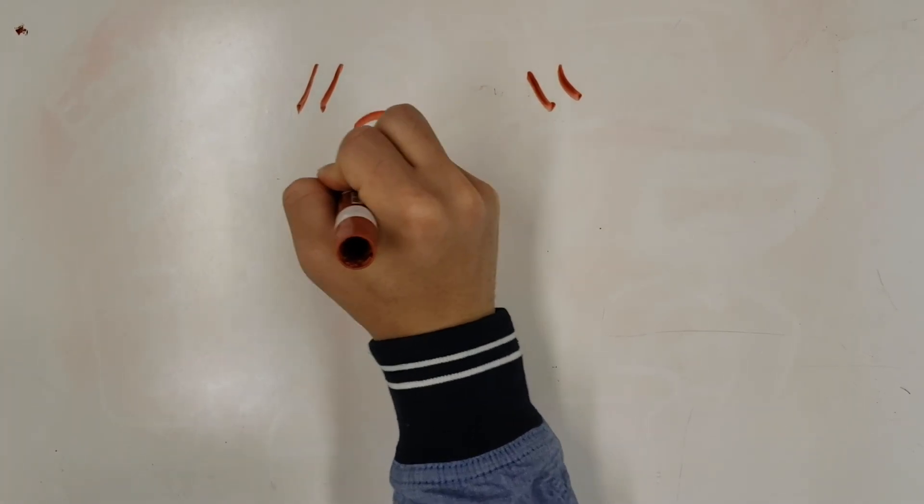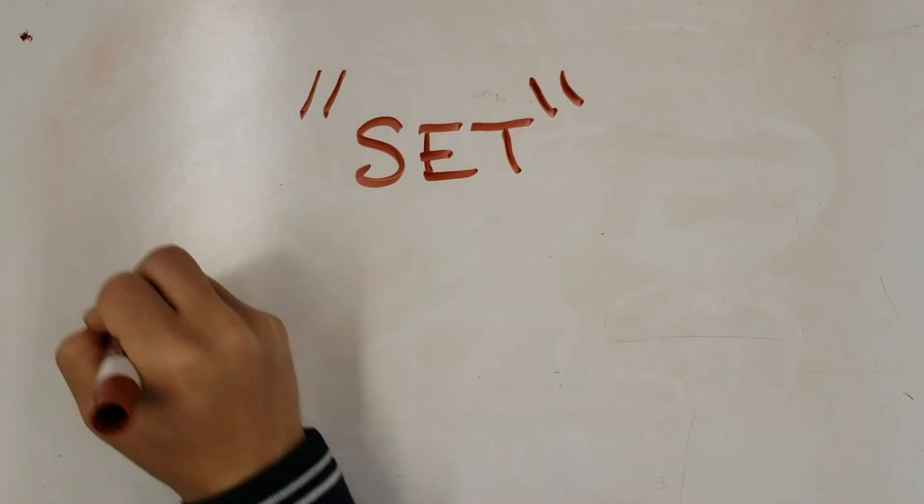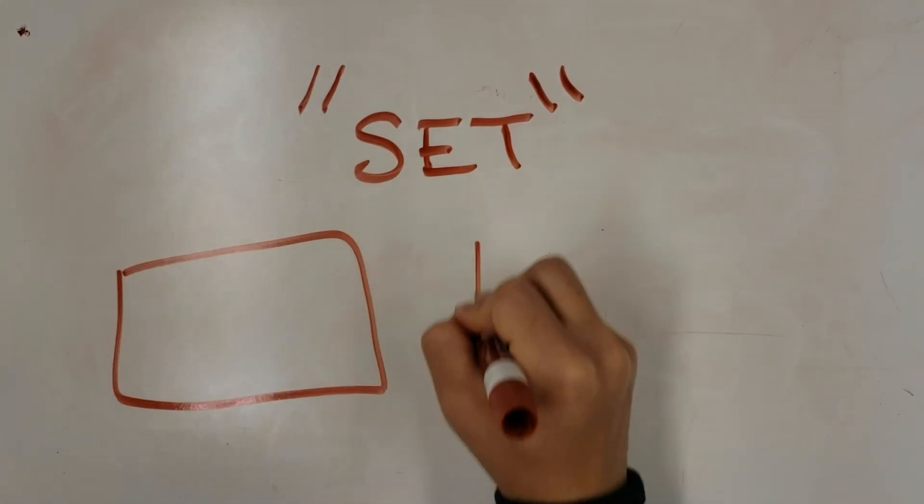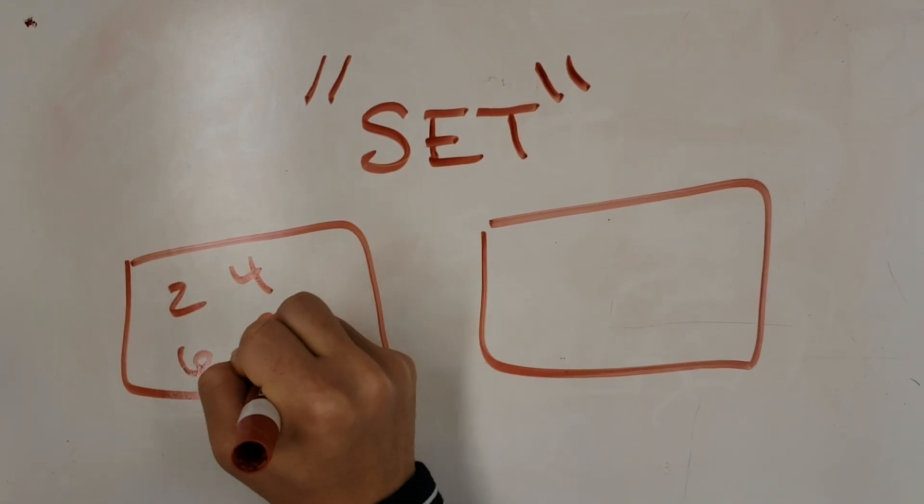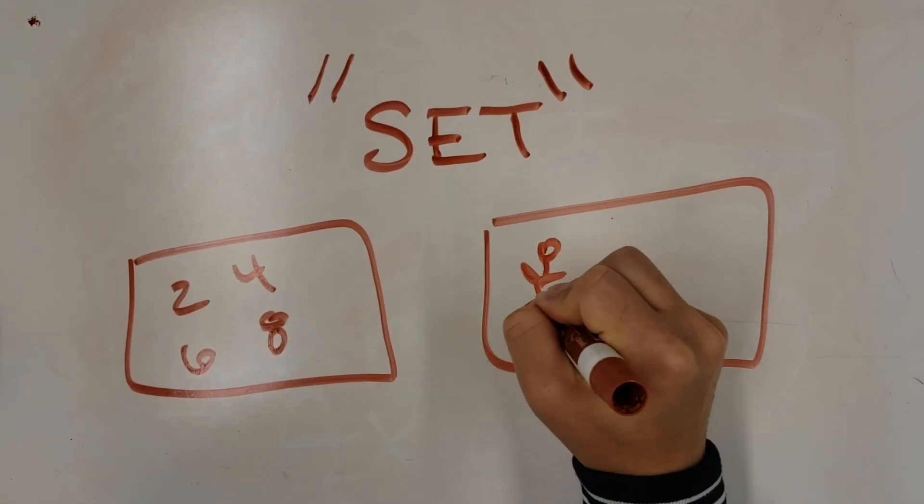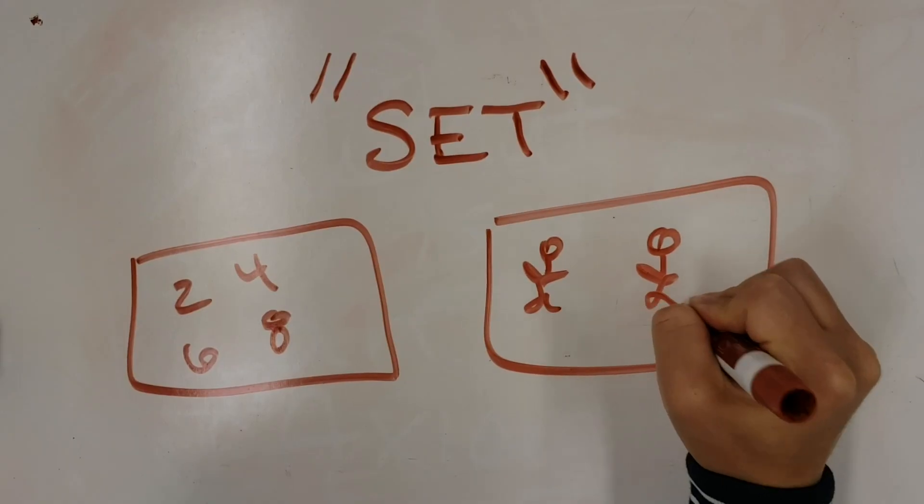An example would be the existence axiom that merely claims there exists a set. All kinds of sets can be imagined: the set of even numbers or even the set of your friends. Hence we have a good reason to accept the existence axiom.